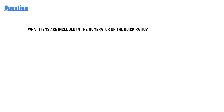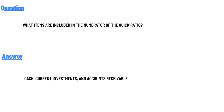Today's question is: what items are included in the denominator of the Q ratio? The correct answer is cash, grants, investments, and accounts receivables.